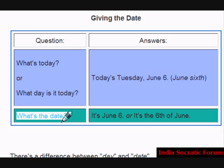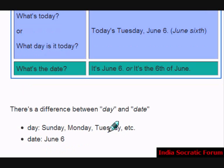Another question is, what's the date? If it's June 6th, or the 6th of June, that would be an appropriate answer. You don't have to give the year. There is a difference between day and date. Day means Sunday, Monday, Tuesday. Date means June 6th, January 1st, December 10th.